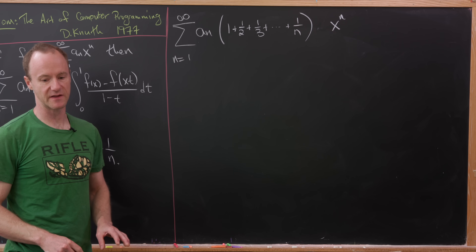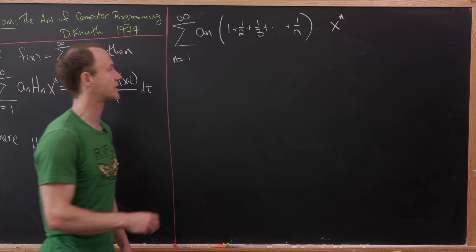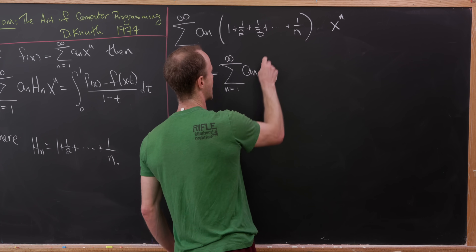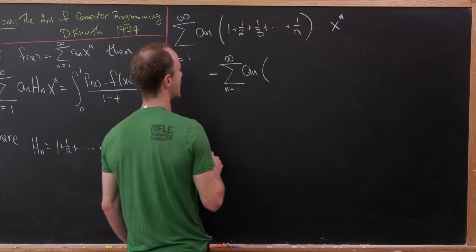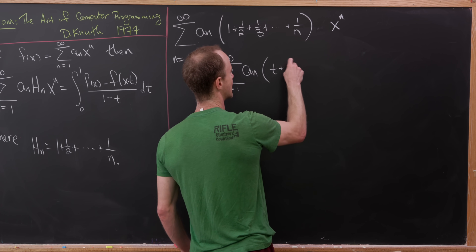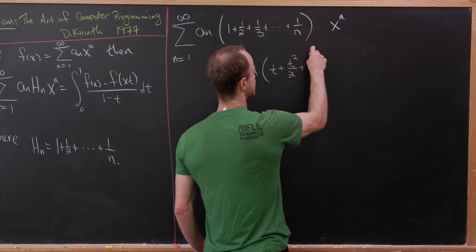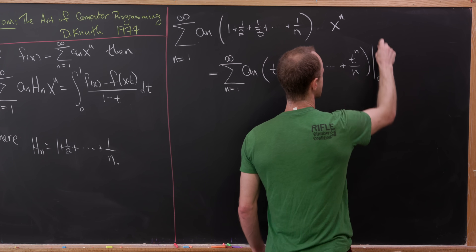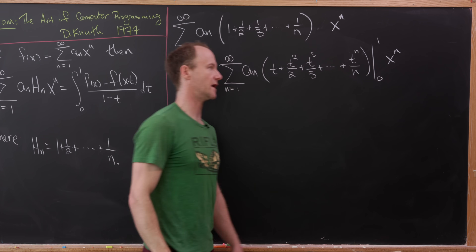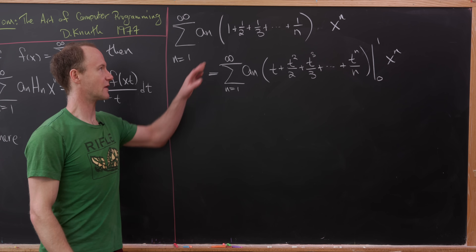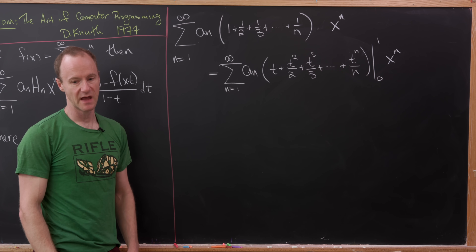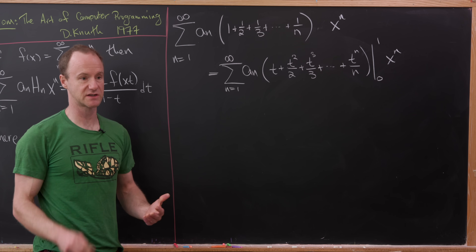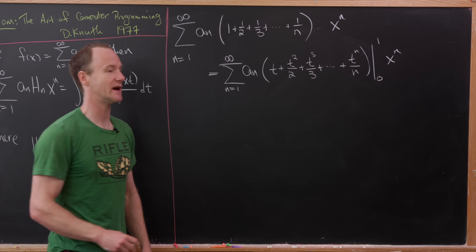Once we have it looking like the evaluation of an integral, we can apply the fundamental theorem of calculus. I've got the sum as n goes from 1 to infinity of a_n, and I'm going to write the harmonic part as t plus t²/2 plus t³/3 all the way to t^n/n, evaluated from 0 to 1. If we evaluate at 1 we get the harmonic number, and at 0 we get 0. Now we'll use the fundamental theorem of calculus to turn this evaluation into a single integral.